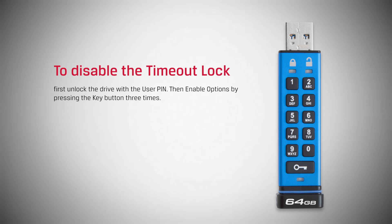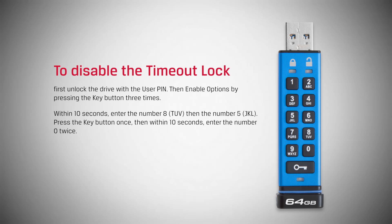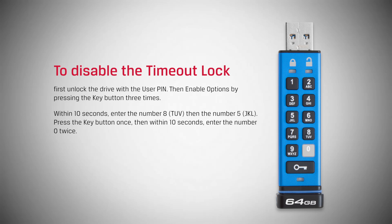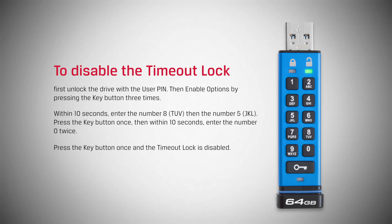To disable the timeout lock, first unlock the drive with the user pin. Then, enable options by pressing the key button three times. Within ten seconds, enter the number eight and then the number five. Press the key button once. Then, within ten seconds, enter the number zero twice. Press the key button once and the timeout lock is disabled.